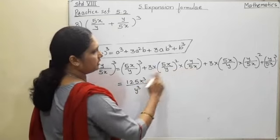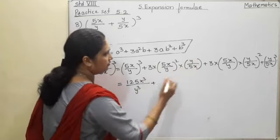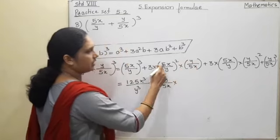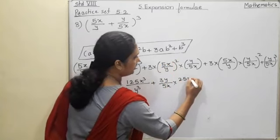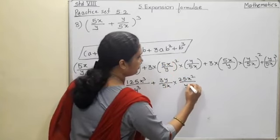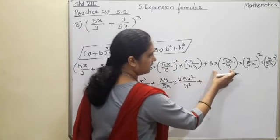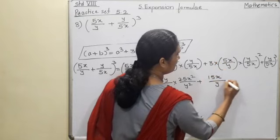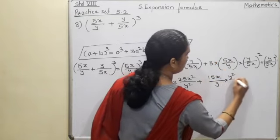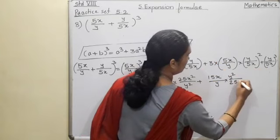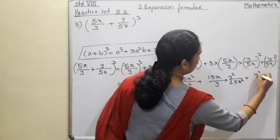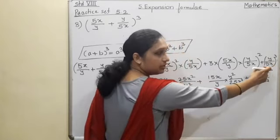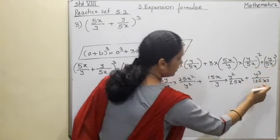now the single number I will multiply first, that is 3 into y/5x, 3y/5x into 5x² is 25x²/y² plus, 3 times 5 is 15x/y into y²/5x², that is 25x² plus y³/125x³. Cube of each and every number here, so y³/125x³.